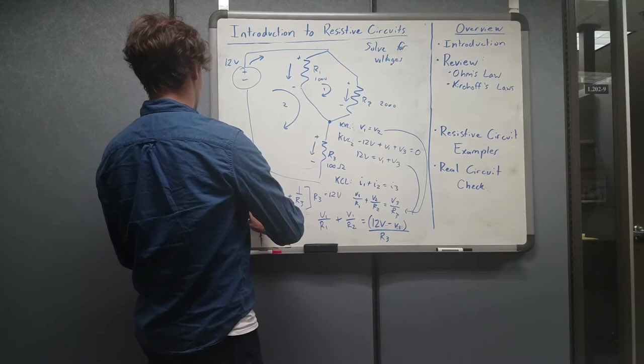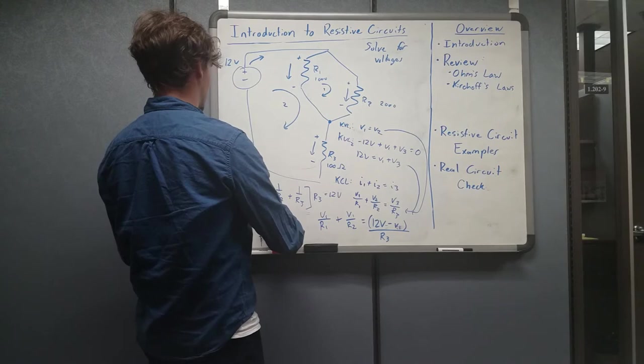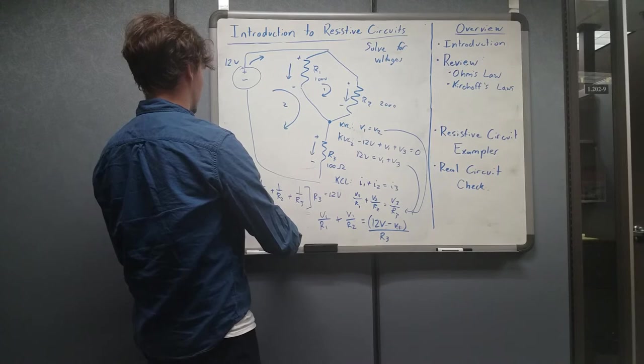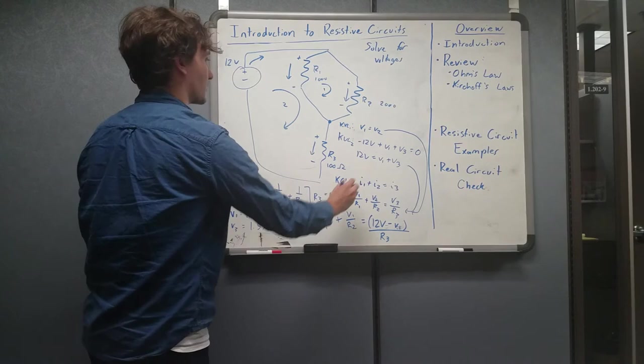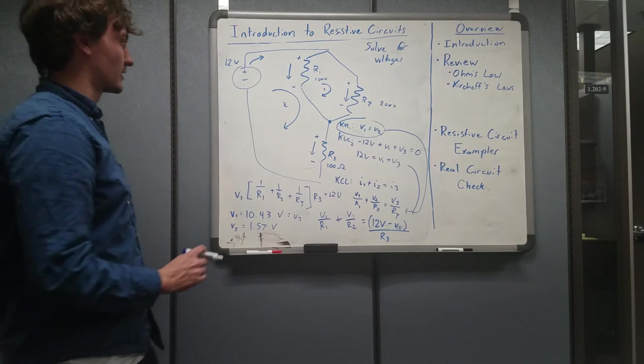And now we can flip this all back over and solve. I believe what you get out of this is that V1, according to my values of 1000, 2000, and 100, is equal to 10.43 volts, and V3 is equal to 1.57 volts. This would also be V2, according to our first condition.